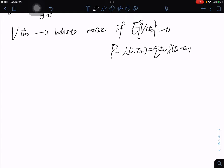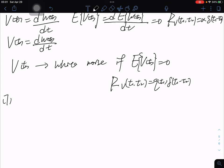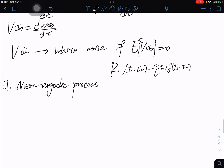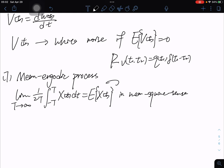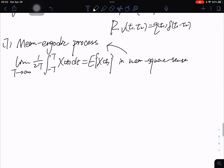And the seven called mean ergodic. The limit as T approaches infinity of 1/T times the integral from -T to T of X(t)dt equals E[X(t)] in mean square sense. And we can say that it is mean ergodic process.